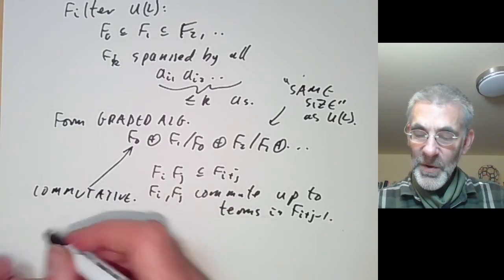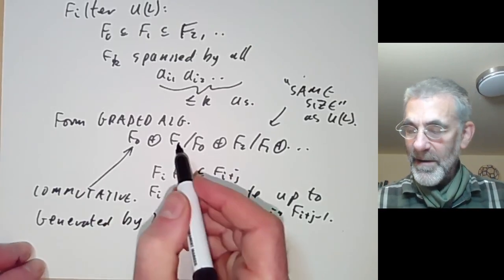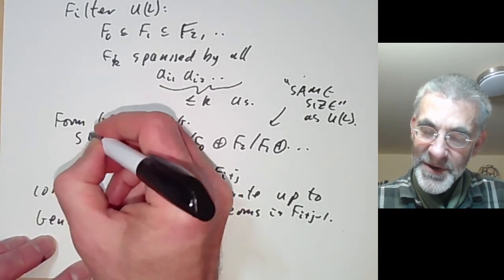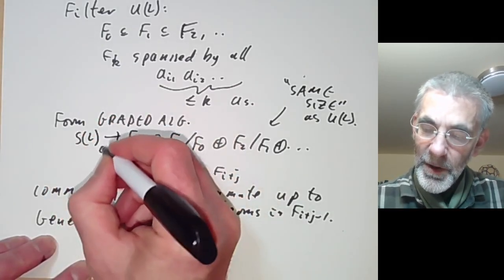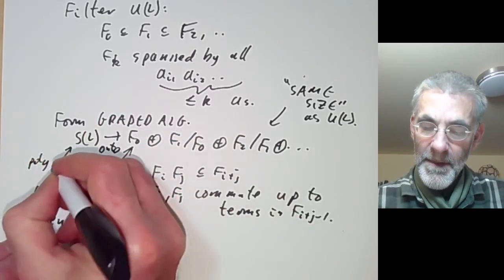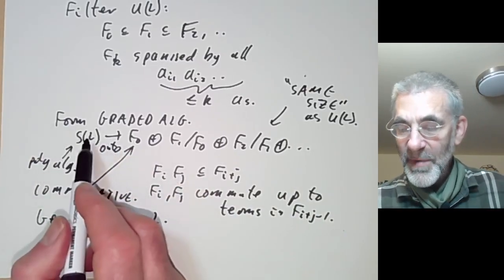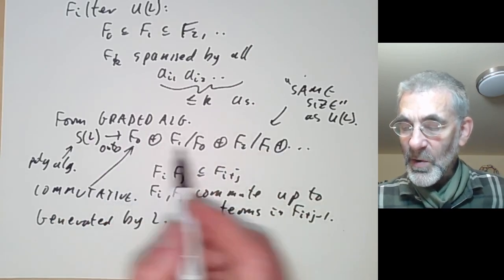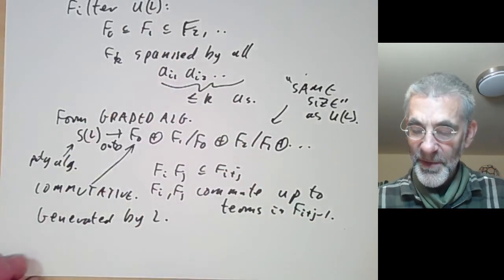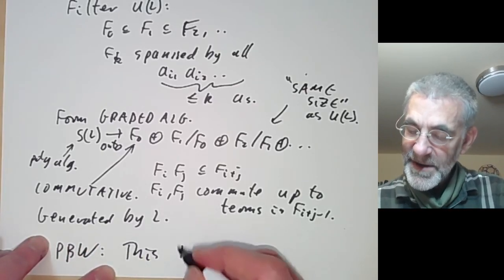Furthermore, this graded algebra is generated by L — or rather the image of L in F₁/F₀. So we have a map from the symmetric algebra of L onto this graded algebra, which is just a polynomial algebra. This gives a surjective map from a polynomial algebra onto a graded algebra that is in some sense the same size as U(L). The Poincaré-Birkhoff-Witt theorem says this map is an isomorphism.